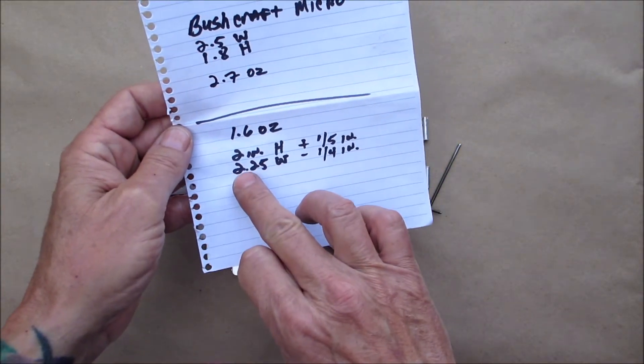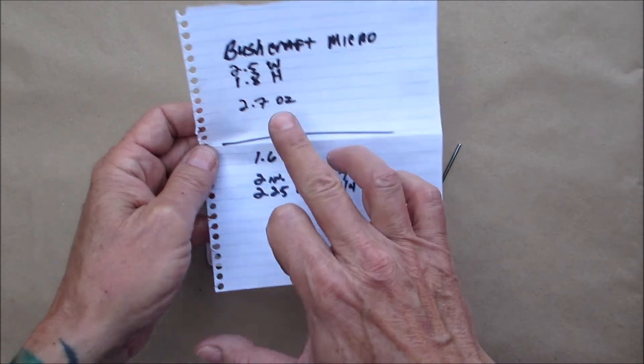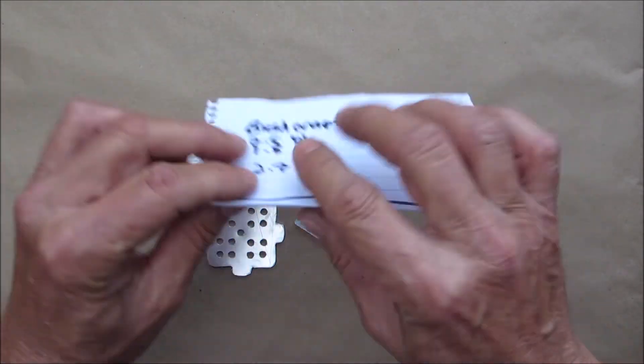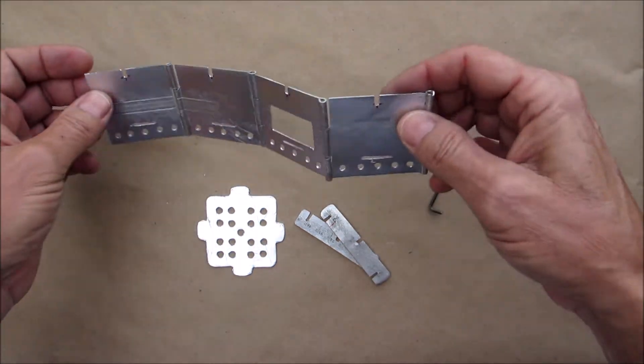And mine is actually 2.25 wide, so two and a quarter wide. Theirs is two and a half, so it's actually a little bit narrower. So this may actually really be the world's smallest folding stove.